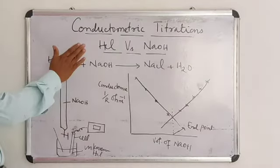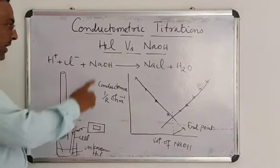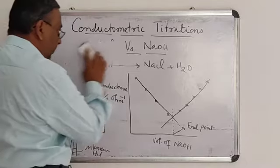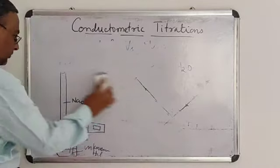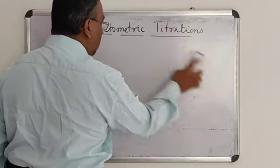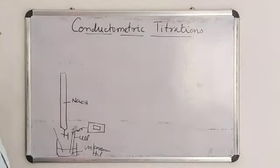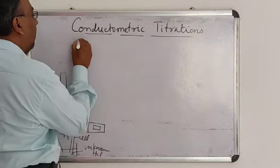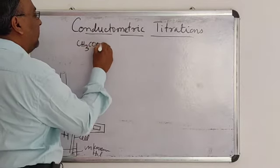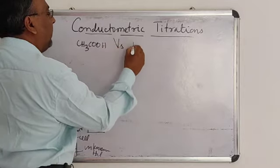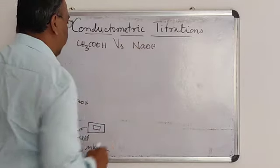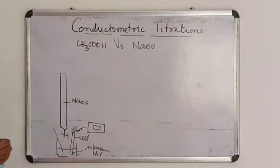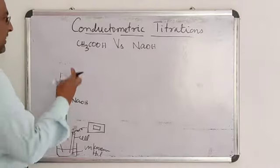This is about the conductometric titration between hydrochloric acid and sodium hydroxide. The next titration we are going to study is what happens when a weak acid like acetic acid is titrated against sodium hydroxide. This is also an acid-base neutralization titration.